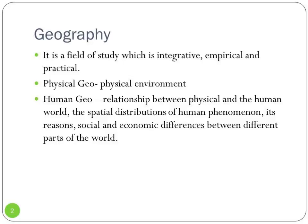The Earth comprises two major components. One is physical geography — that means the physical environment — the landforms, rivers, water bodies and everything you see around you are components of physical geography. The other is human geography, which is basically the relationship between the physical components and the human world.